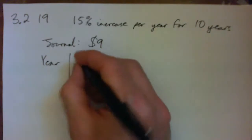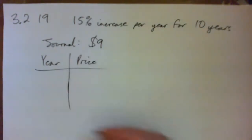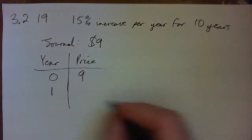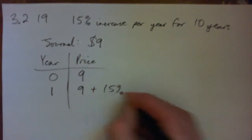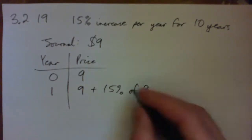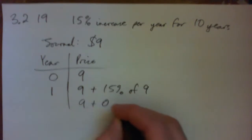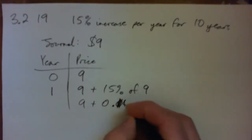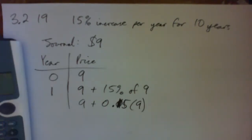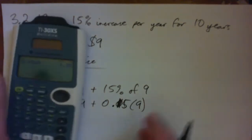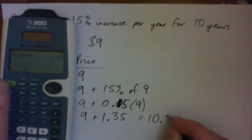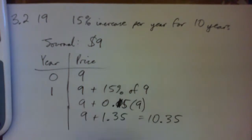I'm just doing a table to make things make sense — you don't have to do a table. Initially it costs nine dollars. After the first year it's going to be nine plus 15% of nine. Fifteen percent is 0.15 times nine, which is $1.35. So it's nine plus $1.35, which is $10.35.